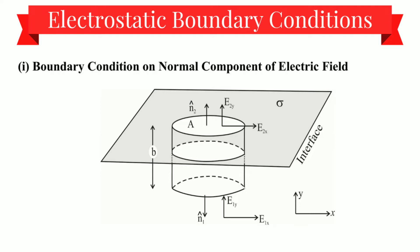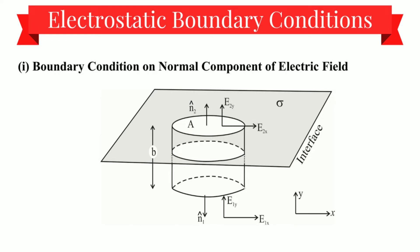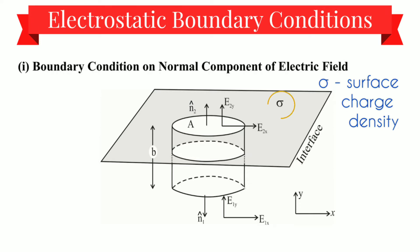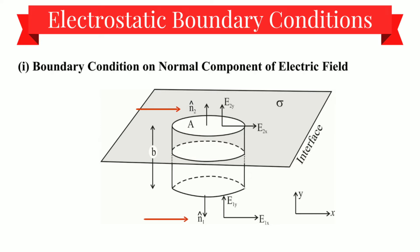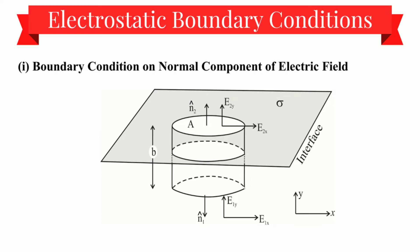Let's understand the diagram first. Here we have a cylindrical Gaussian pillbox which is intersecting this interface such that its half part is below the interface and its half part is above the interface. This interface has sigma surface charge density, and sigma is varying point to point on this surface. b is the height of the cylinder, this is area a, and we have unit vectors n1 and n2. The electric field components are e1x, e1y, e2x, and e2y. This diagram shows the normal component of electric field and we are going to calculate the conditions applied due to this boundary.